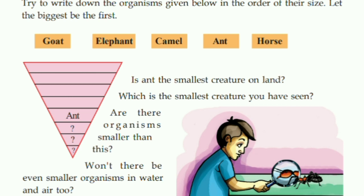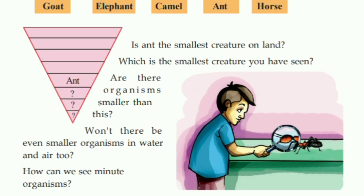I am pretty sure you all are very smart, so if you are able to do this, write it down in your textbook and type in the comment section. Is ant the smallest creature on land? There are many creatures which we are able to see that are smaller than an ant — for example, the fruit fly.